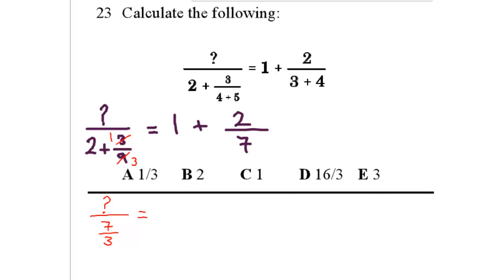Actually I can write 1 plus 2 over 7 as a mixed number 1 and 2 sevenths. So right away it's 1 times 7, 7 plus 2, 9, 9 over 7 as an improper fraction. Now, keep the question mark on the left hand side, equals 9 over 7 as it is on the right hand side.